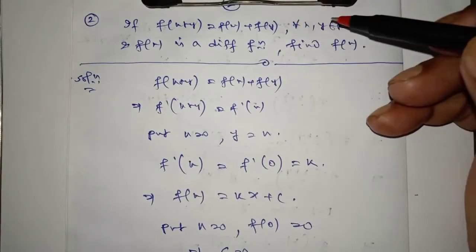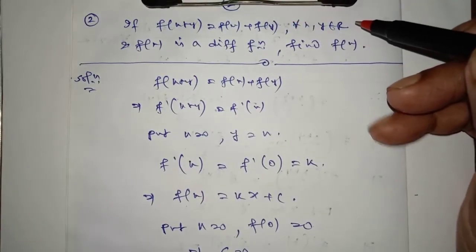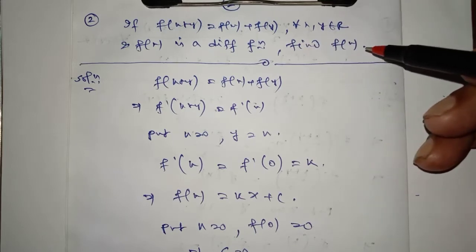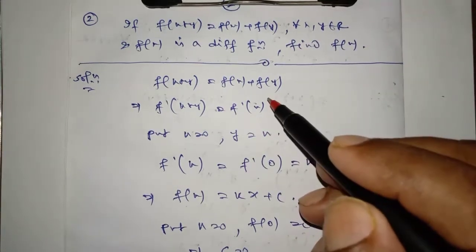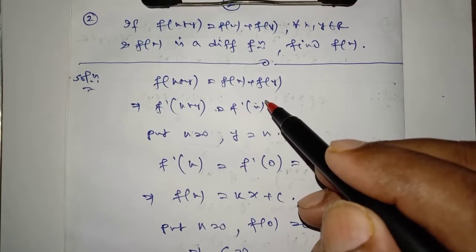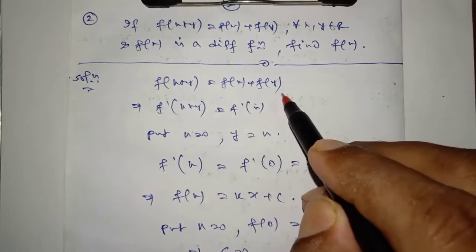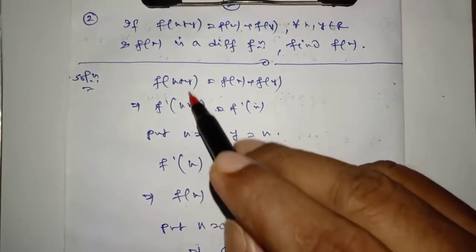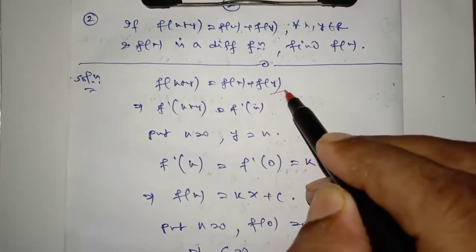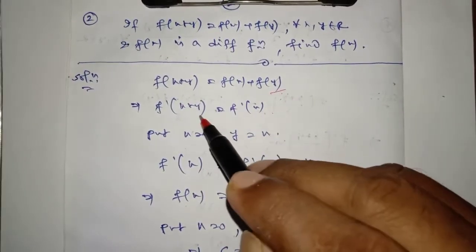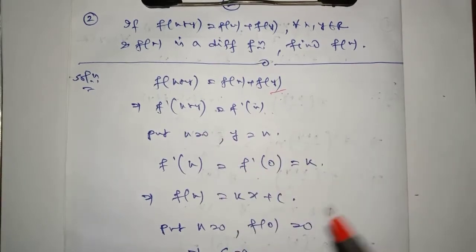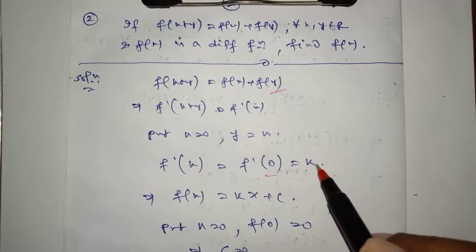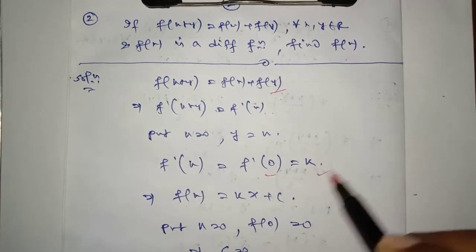Question 2: If f(x+y) = f(x) + f(y) for every x, y belongs to R, and f(x) is a differentiable function, find f(x). To is mein aapko kya karna hai? You differentiate this equation with respect to x where y is a constant. Iska derivative — iska derivative to 0 hai isliye nahi likha. Abb x ki jagah pe 0, y ki jagah pe x likho. So f'(x) = f'(0), which is a constant, so isko k likh diya.